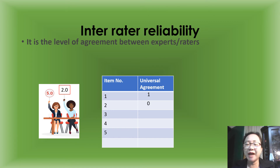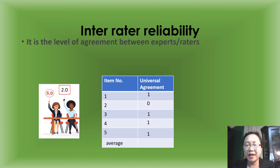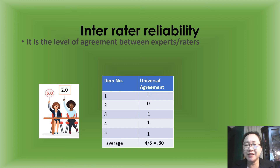Assuming that for items 3, 4, and 5 both experts are in agreement, we give a score of 1. After that, we compute for the average, and the average here is 0.80.